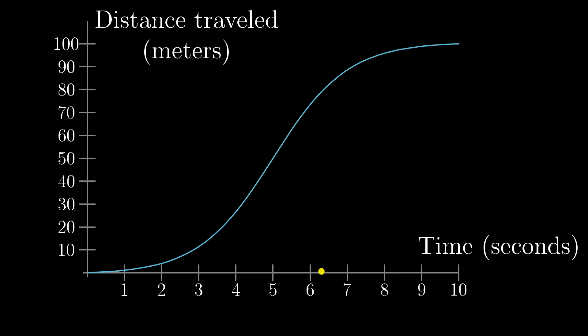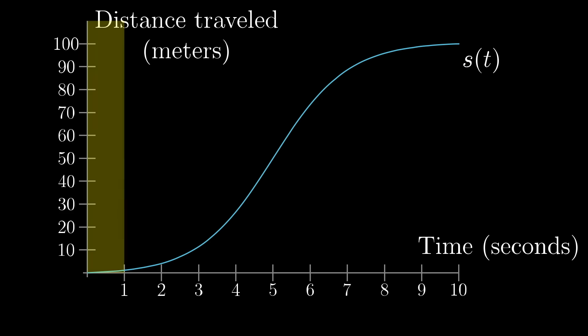So at each time t, represented with a point somewhere on this horizontal axis, the height of the graph tells us how far the car has traveled in total after that amount of time. It's pretty common to name a distance function like this s(t). I would use the letter D for distance, but that guy already has another full-time job in calculus. Initially this curve is quite shallow, since the car is slow to start. During that first second, the distance that it travels doesn't really change that much.